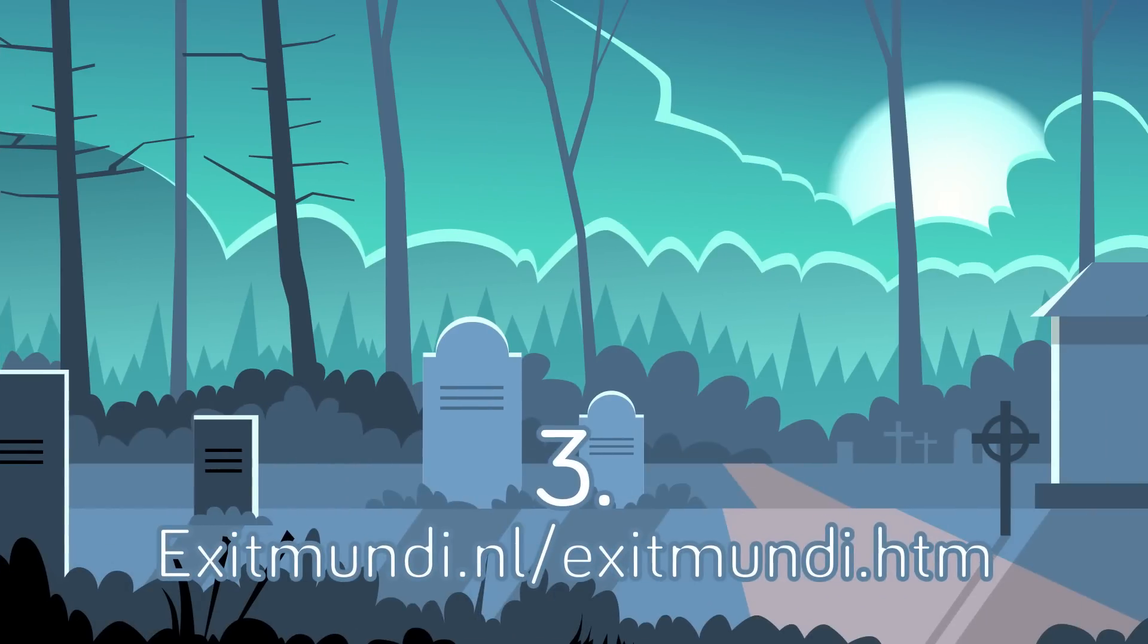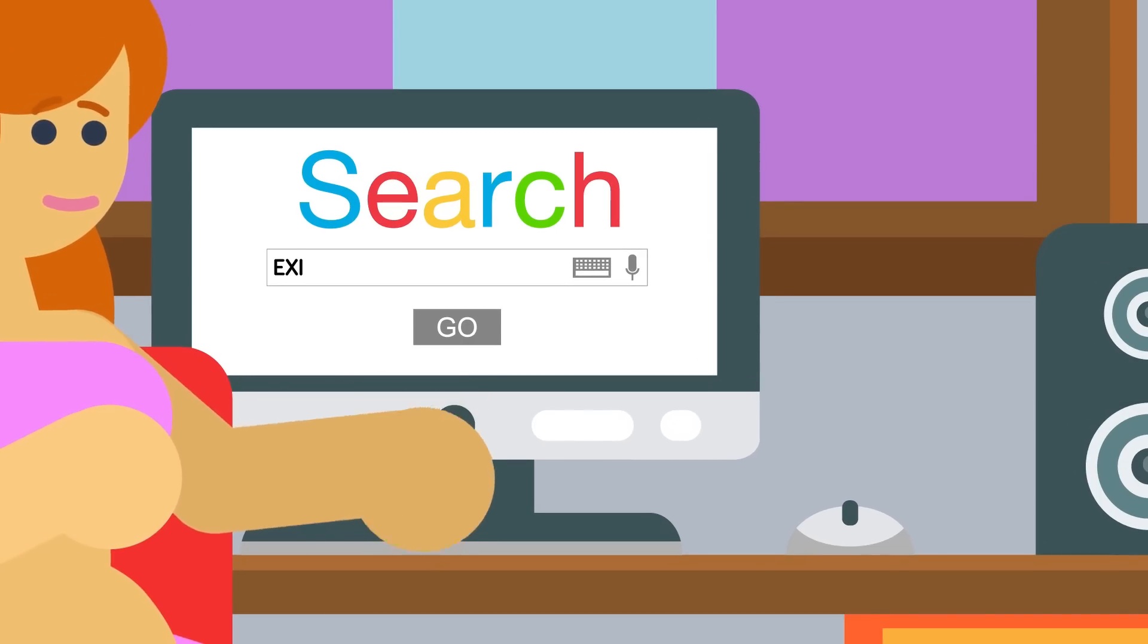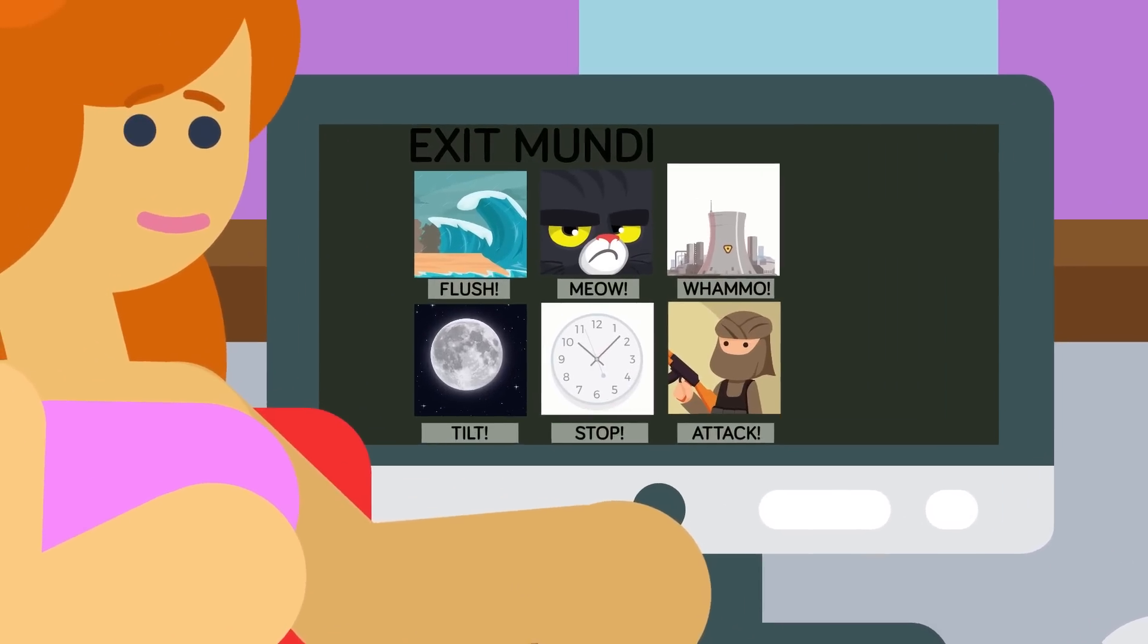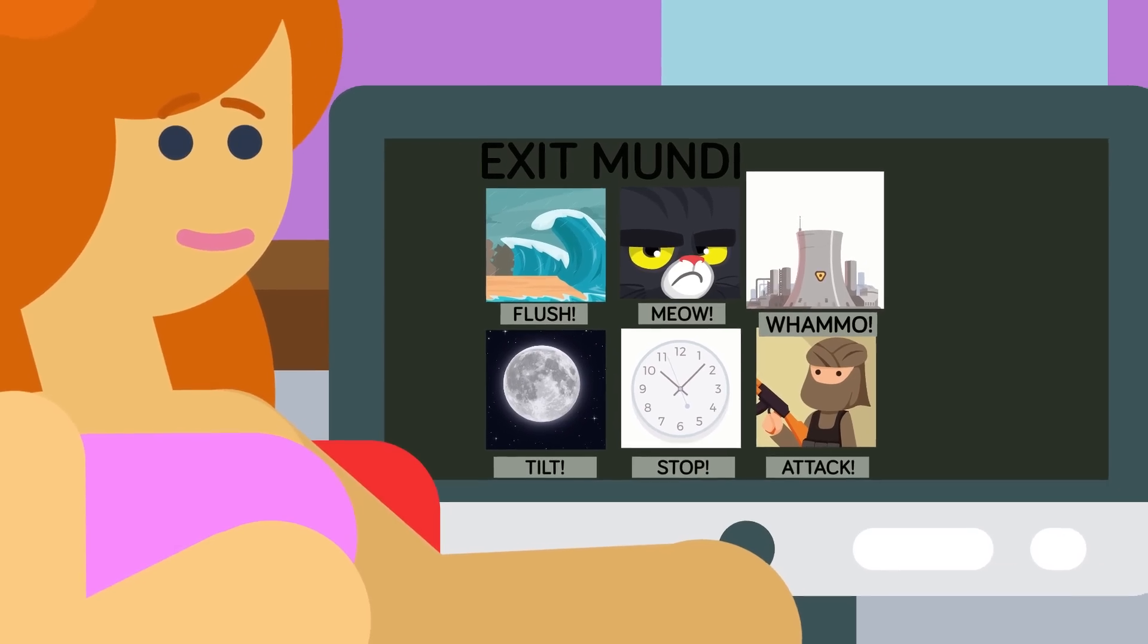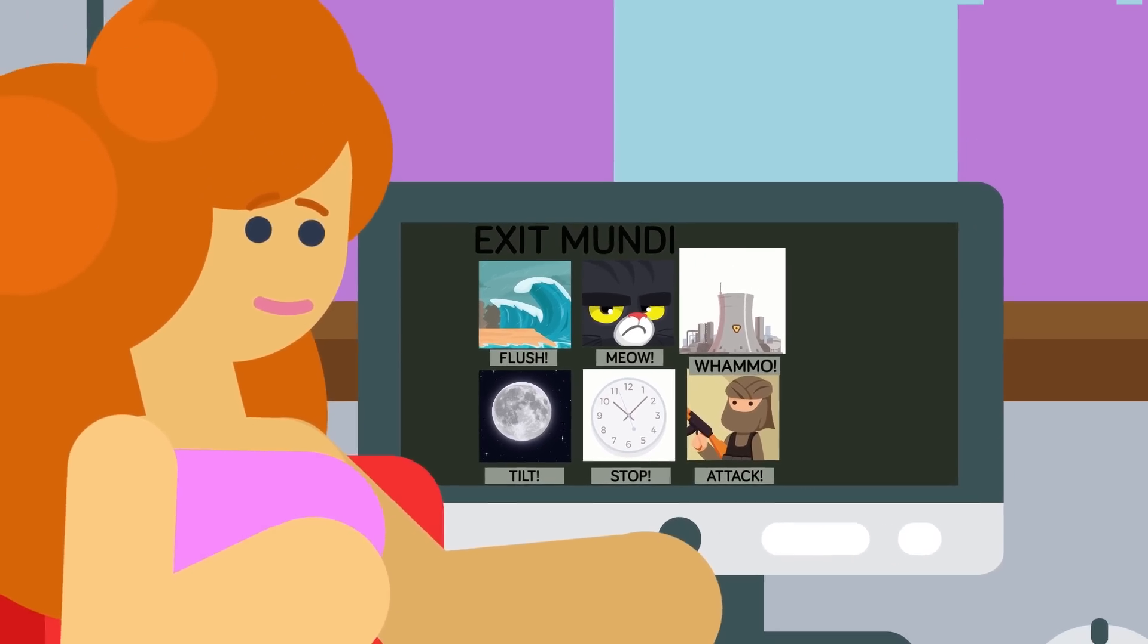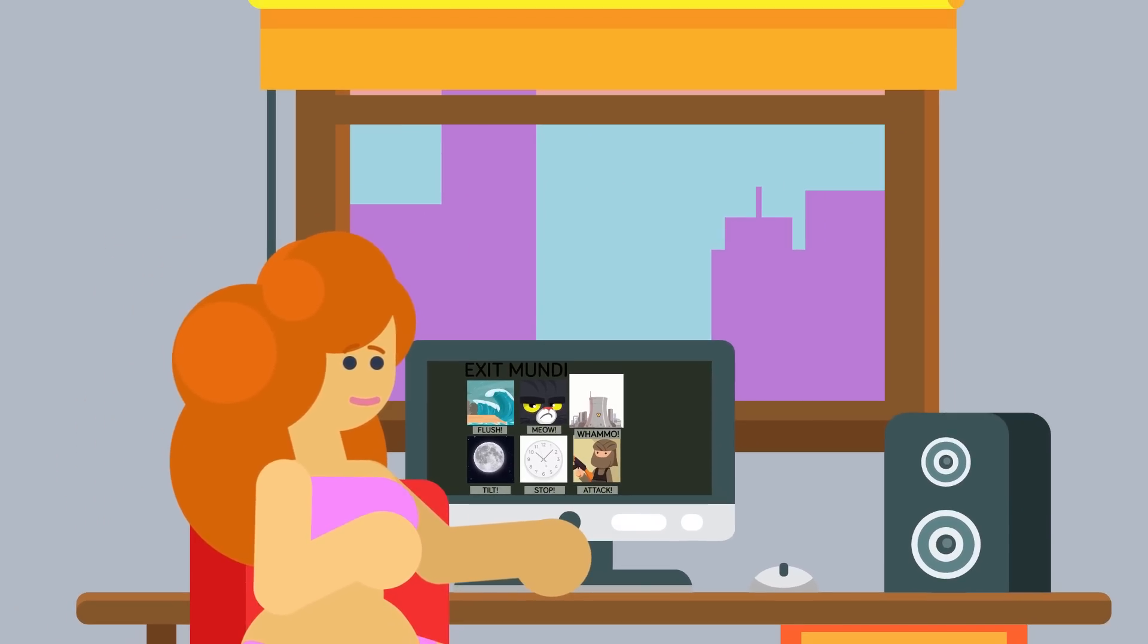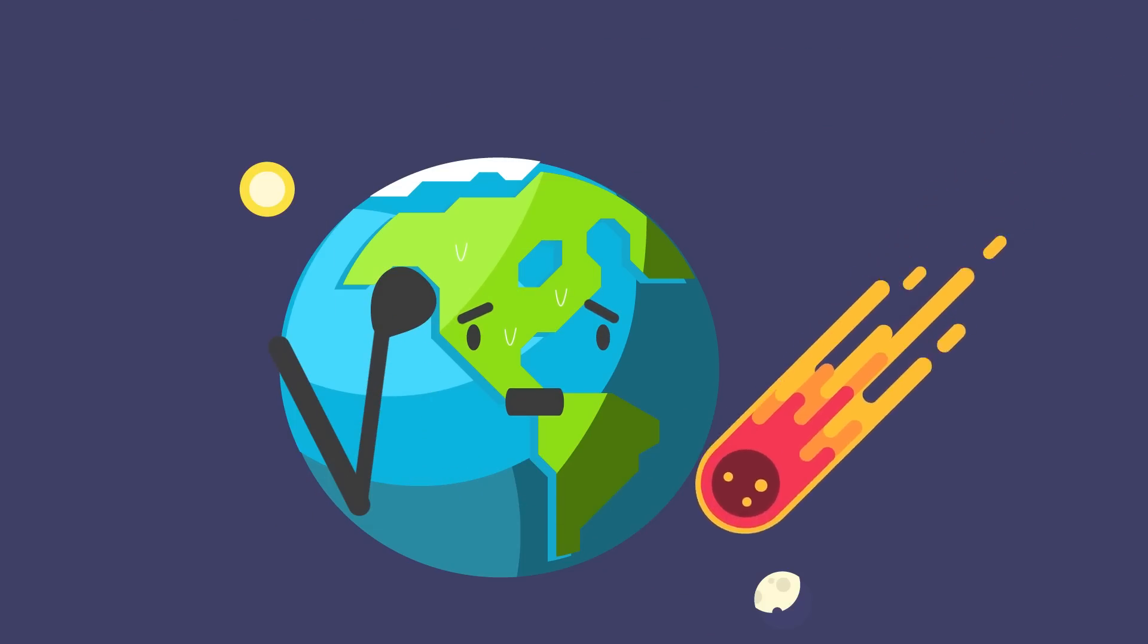Number 3: Exitmundi.nl slash Exitmundi.htm. Believe it or not, there are so many more ways the world could end than by nuclear catastrophe. Many different scenarios are available for you to select from on the Exitmundi website. For example, if you select the Whammo option, you can read in detail about what would happen in the event of a large space rock coming into contact with our planet. In this description it even mentions how in 1998 we were almost hit by a huge comet that wasn't even noticed until it had already passed.